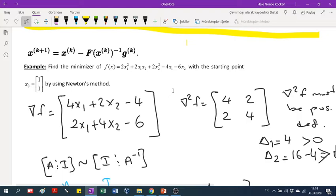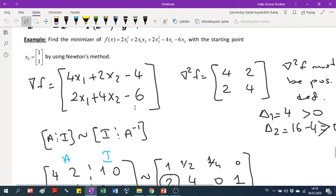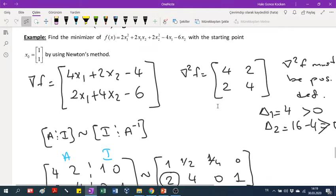Newton's method requires calculating the inverse of the Hessian. So we obtain the gradient of the function, as you see. We obtain the gradient and we obtain the Hessian. And we need to check that our Hessian must be positive definite. We checked it, it is always positive definite, so we can go on.